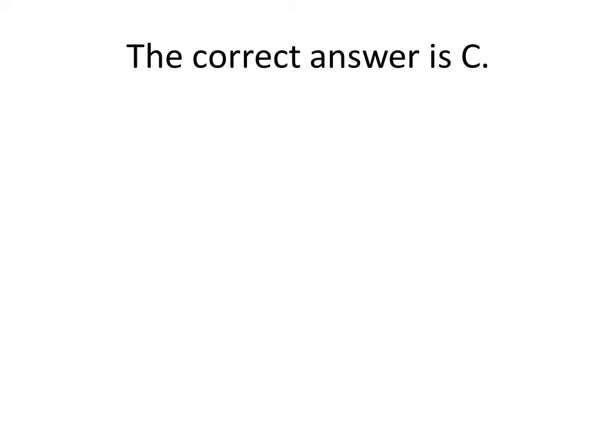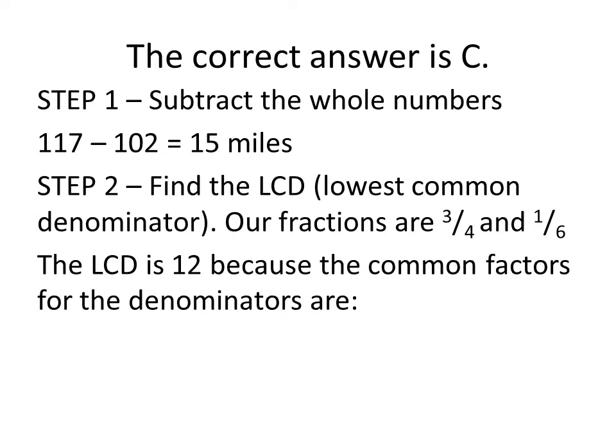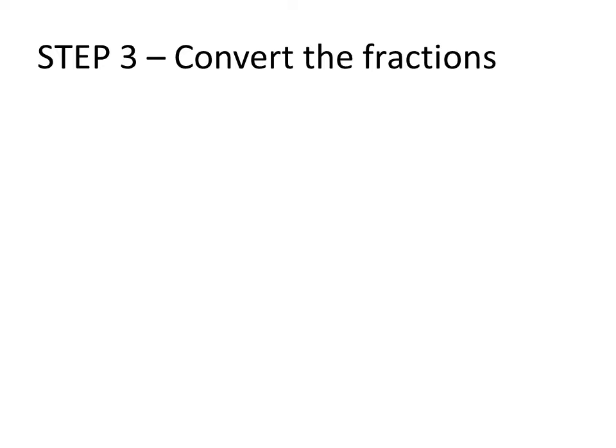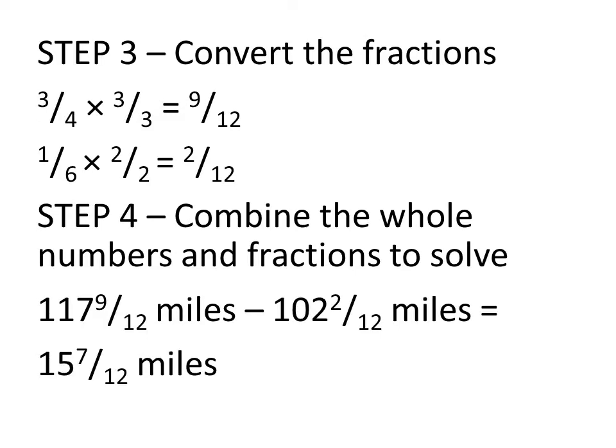The correct answer for this problem is C. For step one, subtract your whole numbers. For step two, find the lowest common denominator. Here we know the lowest common denominator is 12 because the common factors are 3 times 4, which is 12, and 2 times 6, which is also 12. For step three, you need to convert the fractions. 3 fourths from our first mixed number with conversion factor of 3 over 3. After converting the fractions, combine the whole numbers and the fractions to solve. Here we can see our result is 15 and 7 twelfths miles.